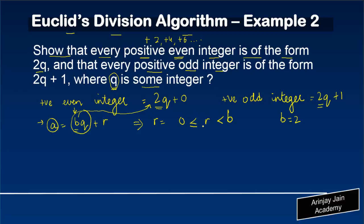Now, if b = 2, that means r can lie between 0 and 2, so 0 ≤ r < 2. But r is also a positive integer, so what values can r take? r can be either 0 or 1, because these are the only two values that satisfy the condition.